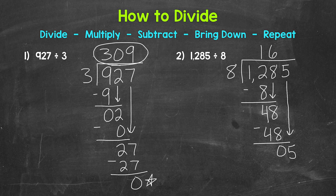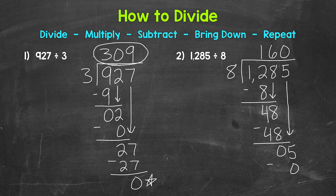We repeat — go back to divide. We have 5 divided by 8. How many whole groups of 8 in 5? None. We need a 0 right here. Don't leave this as 16 — 16 is a lot different than 160. We need that 0 in the 1's place. Multiply: 0 times 8 is 0. Subtract: 5 minus 0 is 5. We've gone all the way to the 1's place within our dividend and don't have anything else to bring down. So that 5 is our remainder. Our answer is 160 remainder 5.